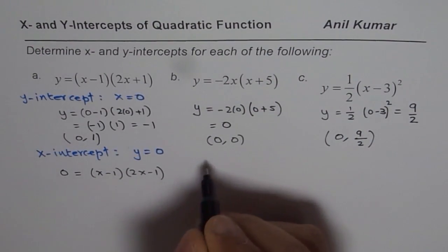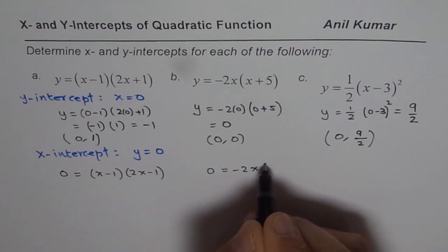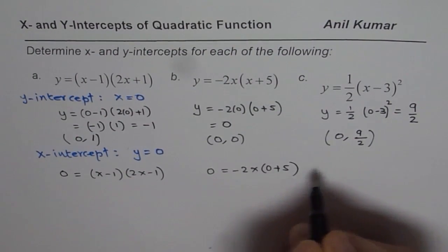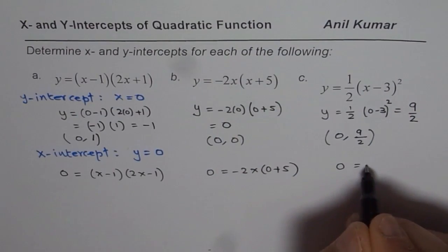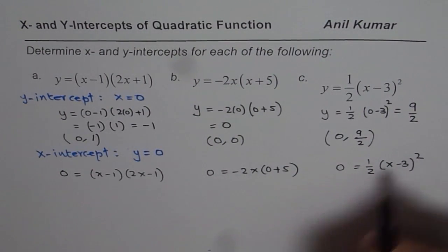So this is the first equation, y is 0. The next one, y is 0, we get minus 2x times 0 plus 5. And the third one, I am placing y as 0, writing the equation as half times x minus 3 whole square.